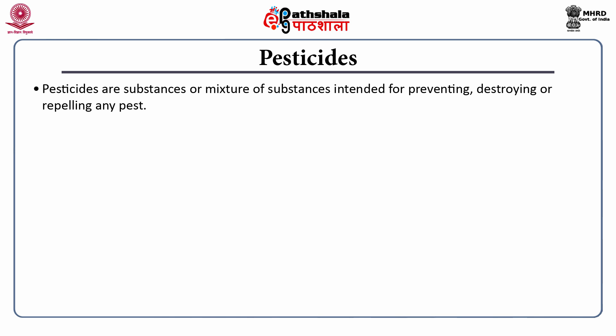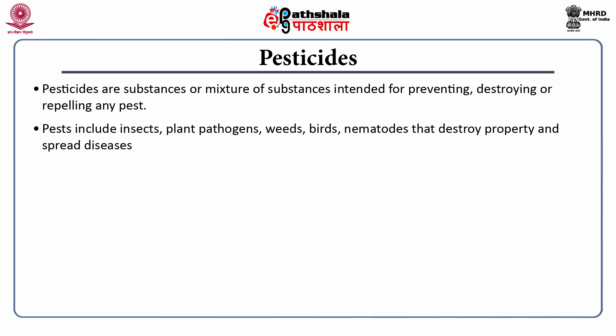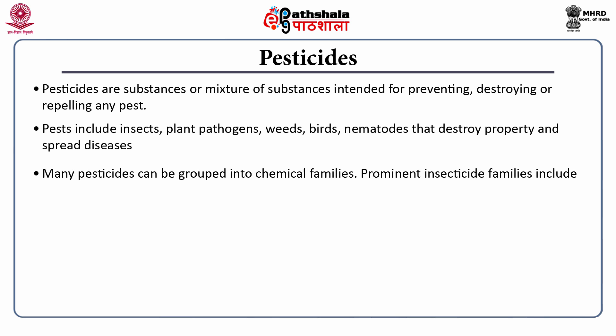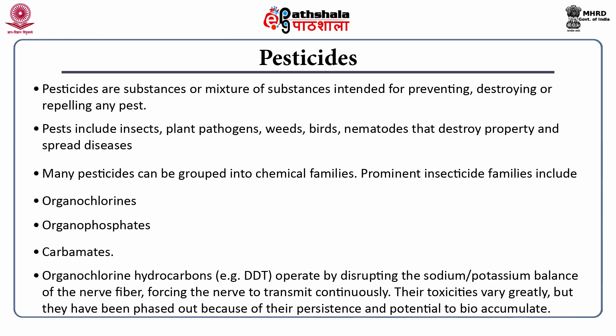Now we would discuss about pesticides. Pesticides are substances or mixtures of substances intended for preventing, destroying or repelling any pest. Pests include insects, plant pathogens, weeds, birds, and nematodes that destroy property and spread diseases. Many pesticides can be grouped into chemical families, but the prominent insecticide families are organochlorines, organophosphates and carbamates. Organochlorine hydrocarbons, for example the famous DDT, operate by disrupting the sodium-potassium balance of the nerve fiber, forcing the nerve to transmit continuously. Their toxicities vary greatly, but they have been phased out because of their persistence and potential to bioaccumulate.